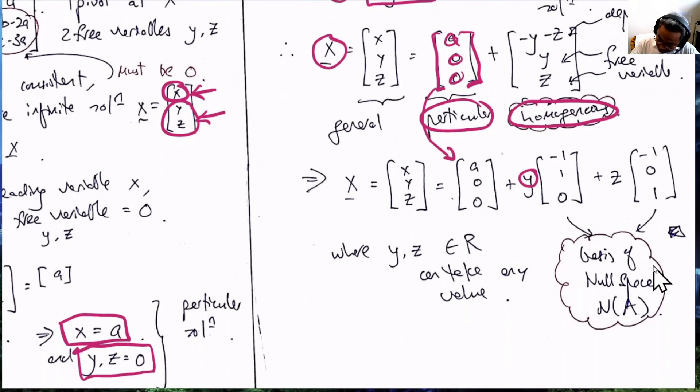Now, these two vectors are actually the basis of the null space of A. So this is how you solve for the general solution of the unknown variable X when it has a particular and homogeneous solution. Thank you.